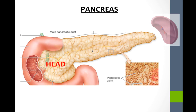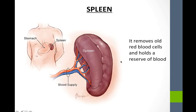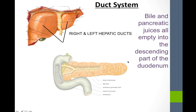The pancreas has a head cradled by the duodenum, a body that transverses the vertebrae posteriorly, and a tail pointing toward the spleen. The spleen is found in the left upper quadrant. In a cadaveric image, the duodenum, head of the pancreas, body, tail, and spleen in the left upper quadrant are all visible. The spleen's main roles include removing old red blood cells and holding a reserve of blood.